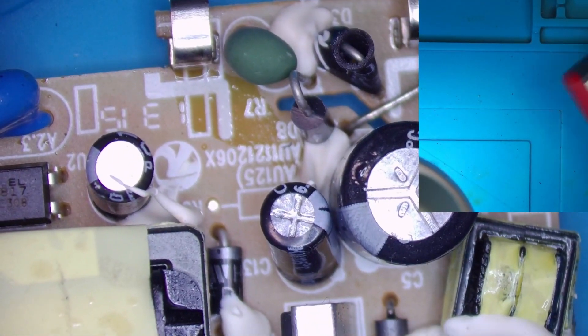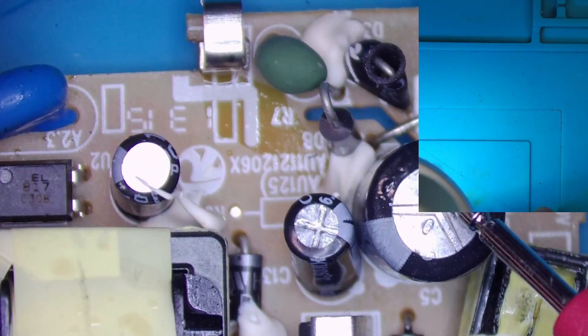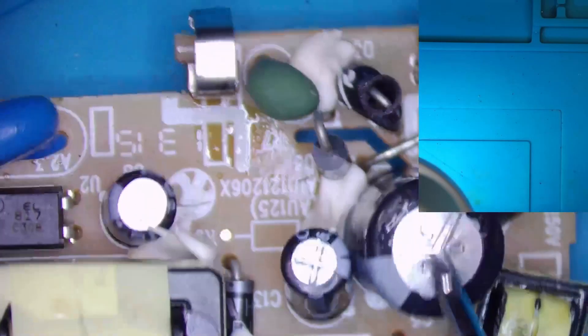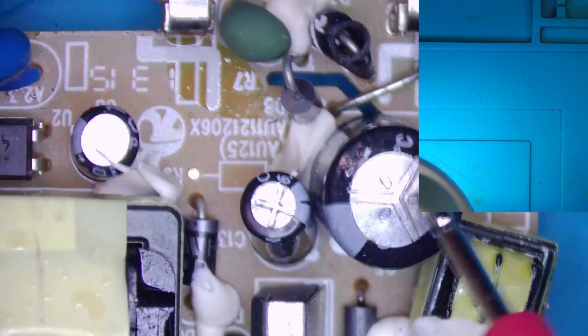So I think the first thing I'll do is to take off C5, this one, and put a new cap on, 10 microfarads, 400 volts, we'll replace this.